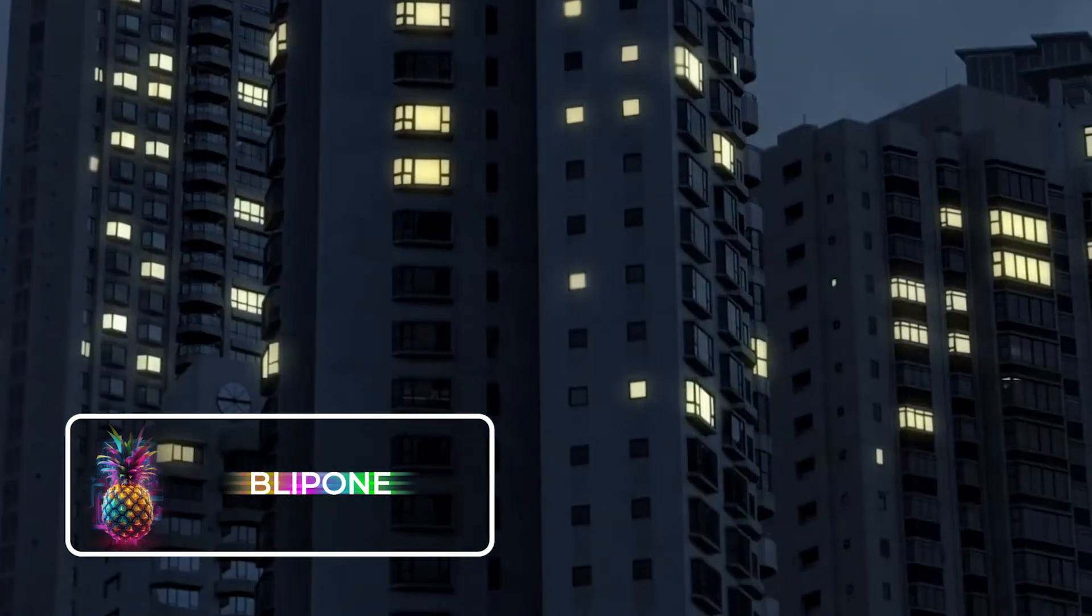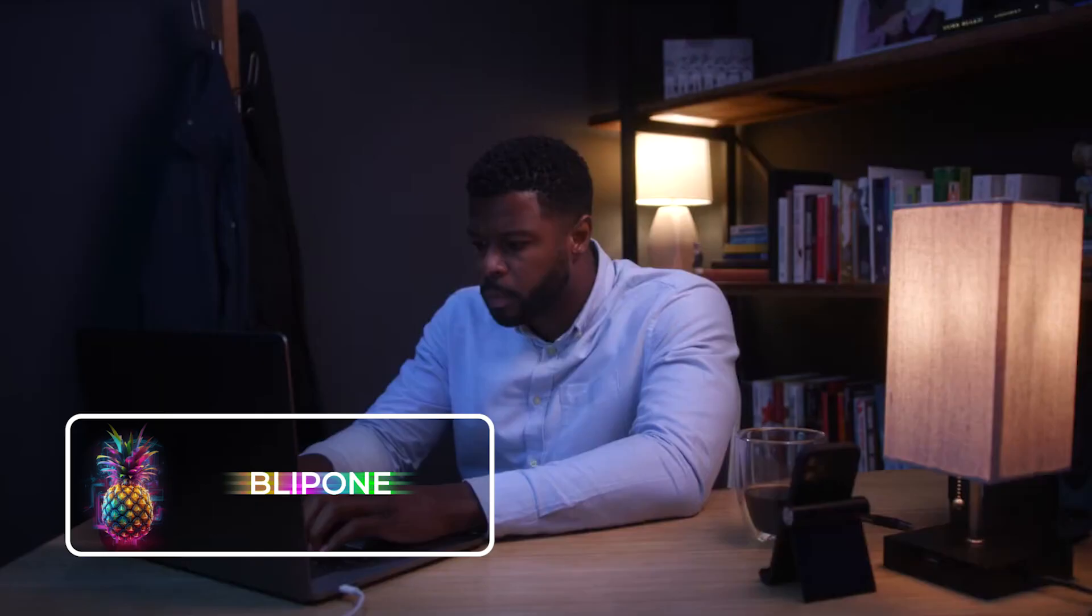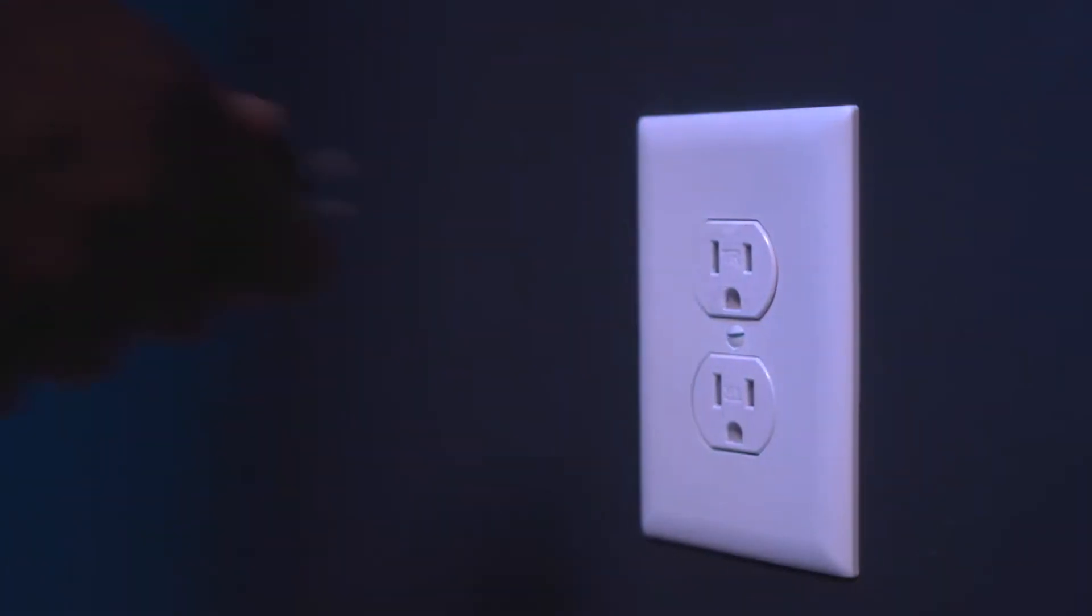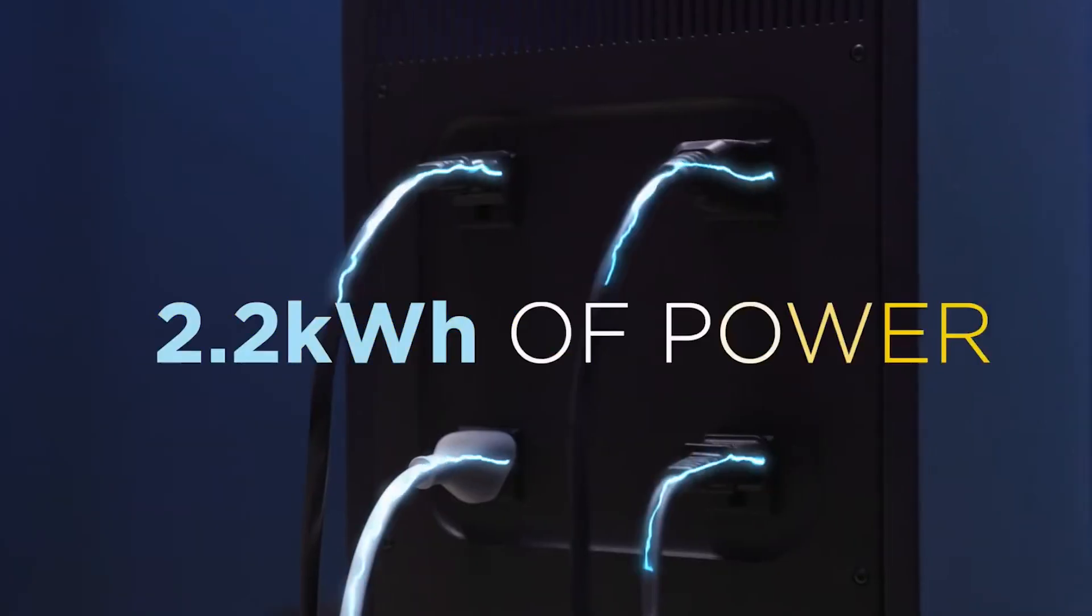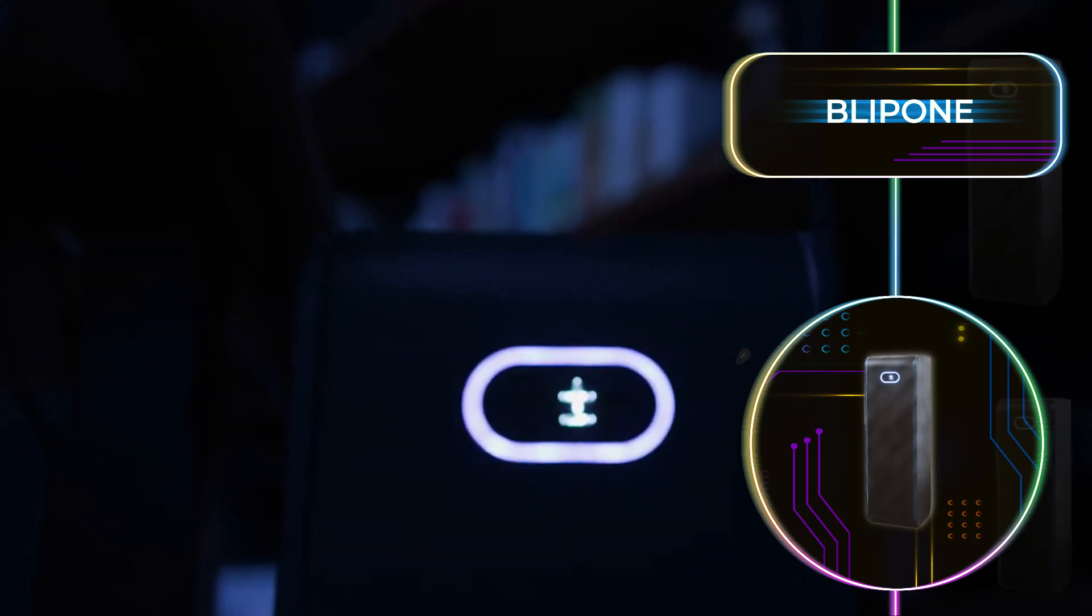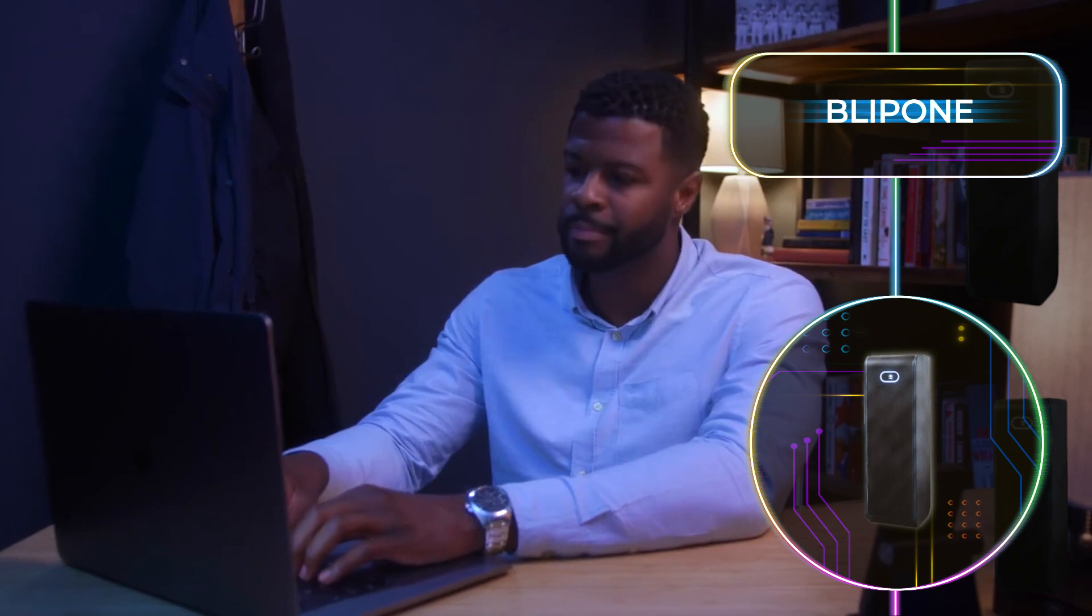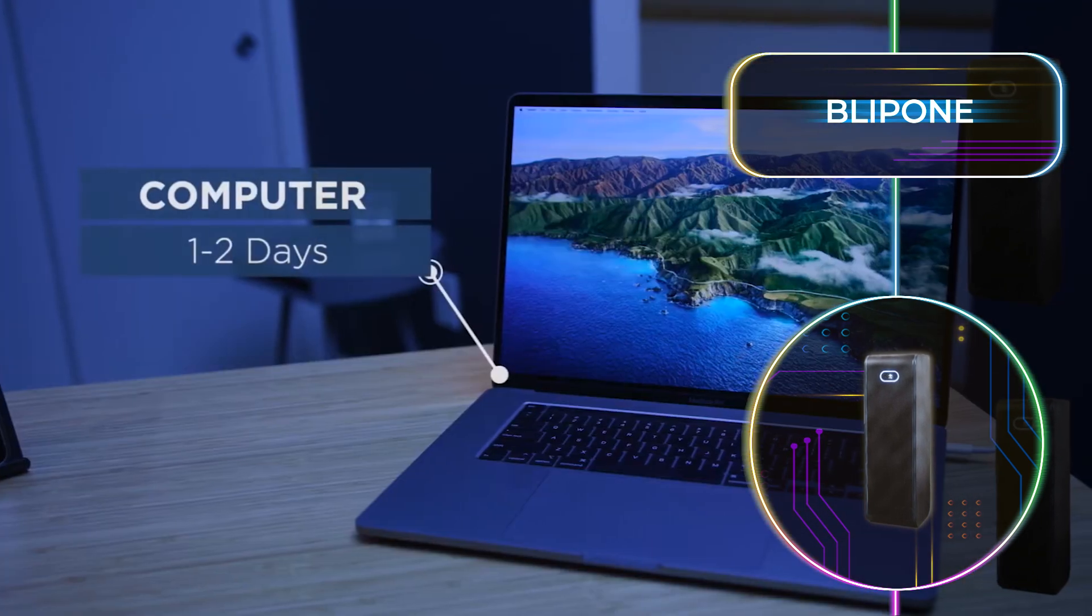Blip 1. Research suggests that 16% of employees worldwide work from home permanently. But how can you cater for the additional electricity usage in doing so? The Blip 1 stores 2.2 kilowatts of power, so even if you have a tough deadline looming and lose your power, it has you covered and can keep your computer going for up to 2 days.